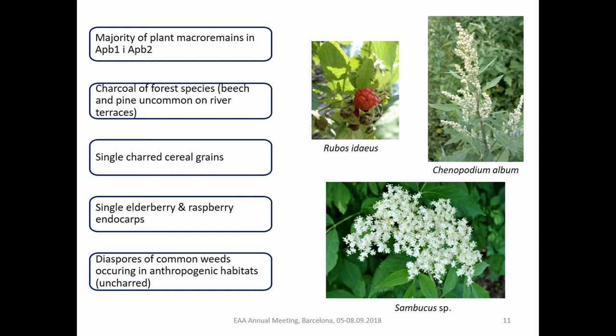The botanical picture: the majority of plant macro remains were located in the upper two subhorizons, APB1 and APB2, which corresponds with the micromorphology there. The charcoal came from forest species — oak, elm, beech, and pine — and especially beech and pine are uncommon in alluvial settings. There were only single charred cereal grains — really just one, two, or three. Some seeds of elderberry and raspberry were also identified, and the rest of the macro remains were unburnt diaspores of weeds which occur in anthropogenic habitats.